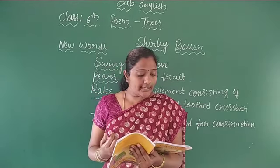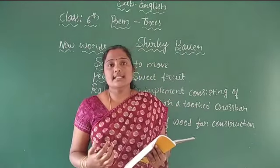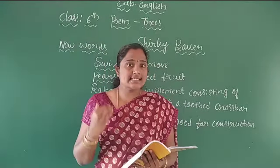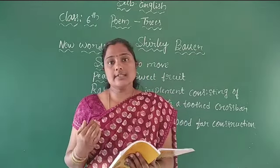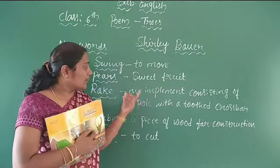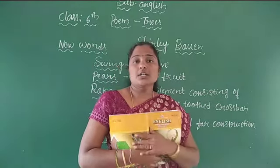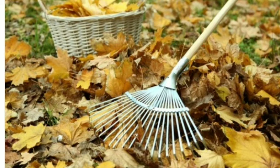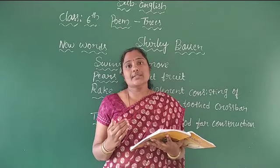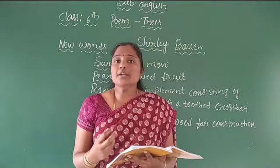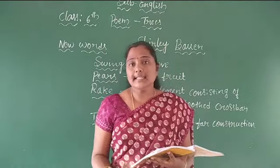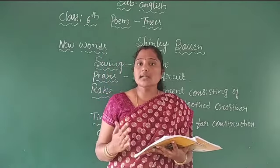'Trees make father say, what a lot of leaves to rake this fall' — while mother feels trees are beautiful to paint, the father is complaining about the trees. A rake is an implement consisting of a pole with a toothed crossbar. The father says that with the help of a rake we should clean the ground — if there is a tree in front of your house, we have to clean all the dead leaves every day. So the father complains because it is a burden to him to clean the dead leaves.